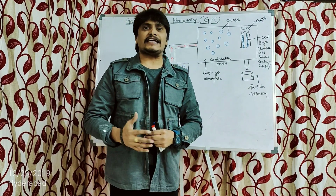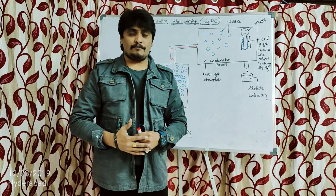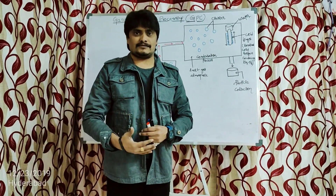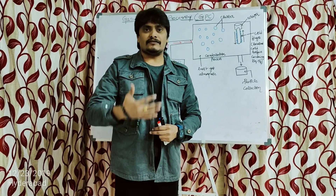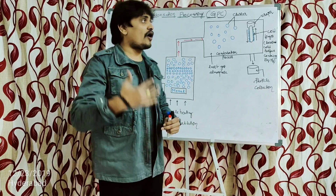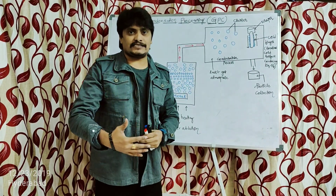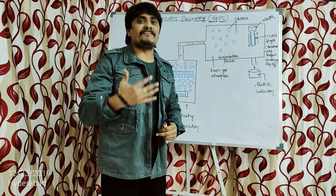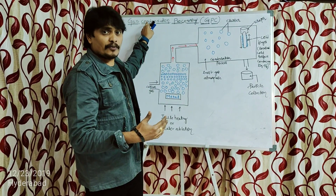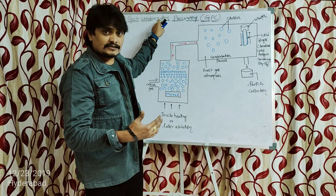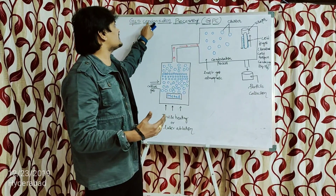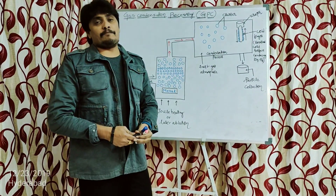This method is called gas condensation processing because in this method, the metal is considered as the precursor. This metal is heated beyond its melting point, by which it gets vaporized — the metals are converted into gases. Those metallic gas molecules are then condensed and processed into nanomaterials. That is why this method is called gas condensation processing.